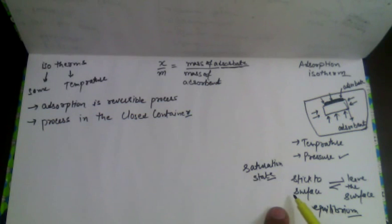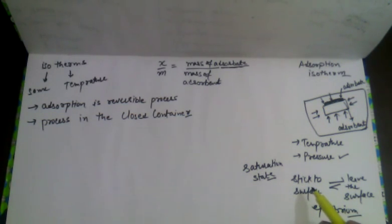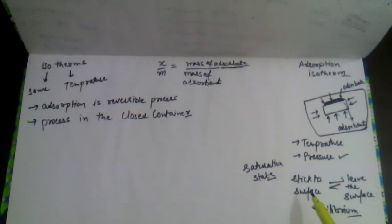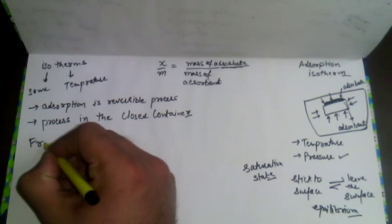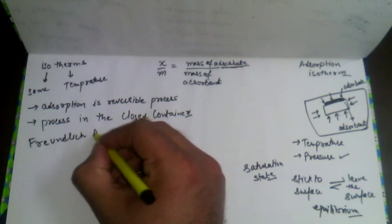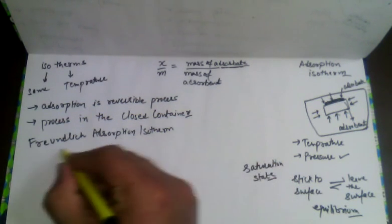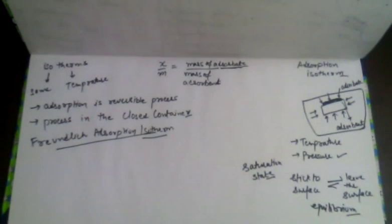At the saturation state, gas keeps leaving and sticking at the same rate, but there is no net increase in the amount of gas sticking to the surface. We can draw two types of adsorption isotherms — the first is the Freundlich adsorption isotherm, named after the scientist.